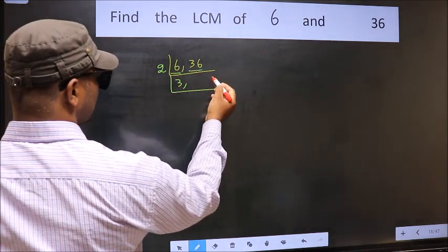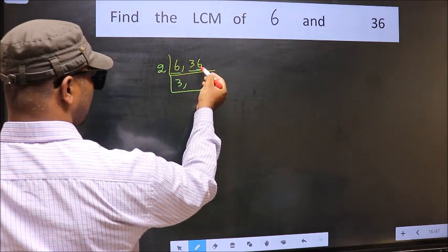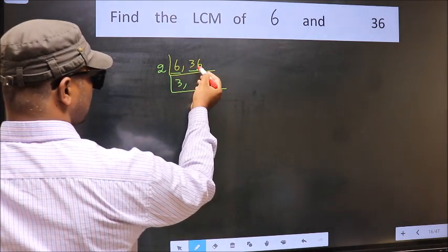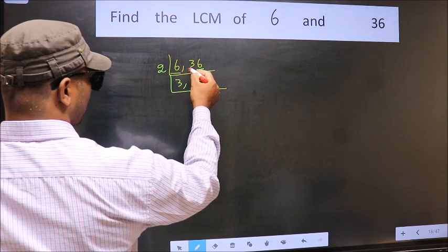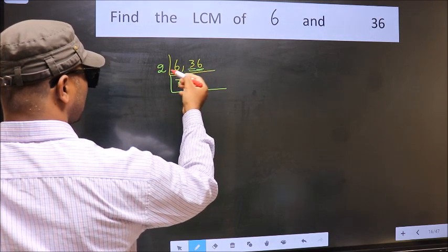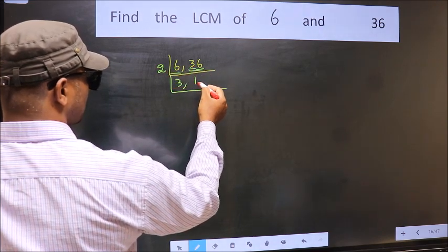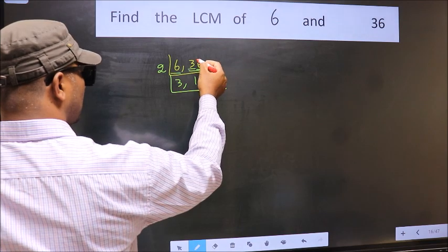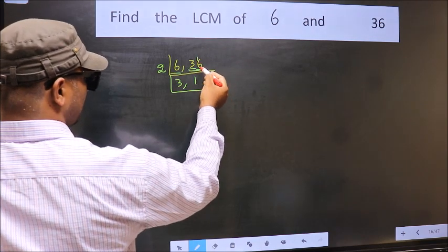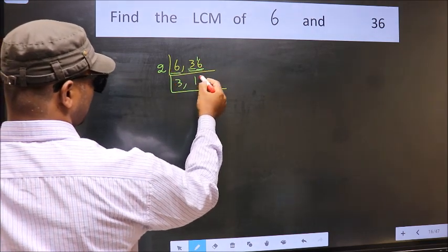Now the other number 36. Last digit 6, even. So this number is divisible by 2. First number 3. A number close to 3 in 2 table is 2, 1, 2. 3 minus 2, 1, 1. Carried forward 16. When do we get 16 in 2 table? 2, 8, 16.